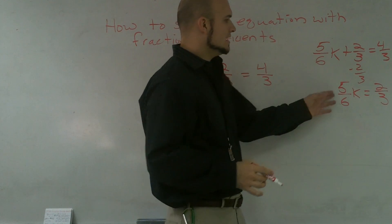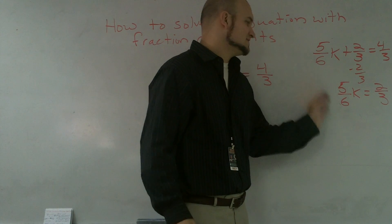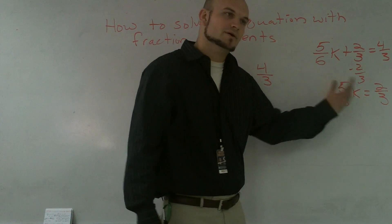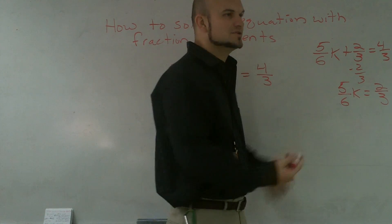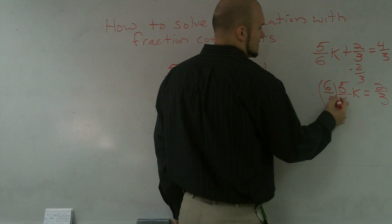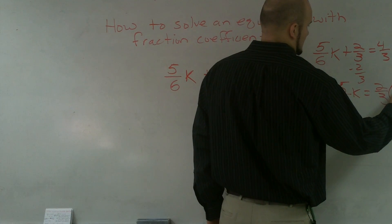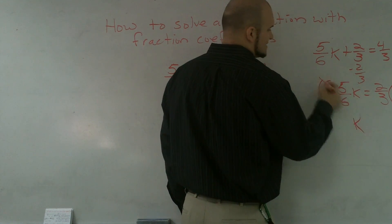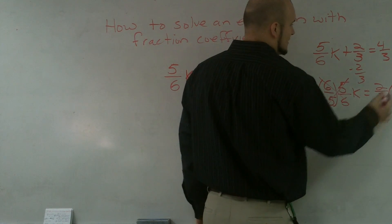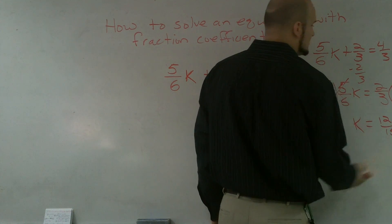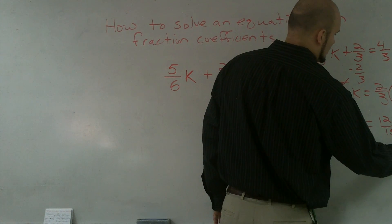so I get five-sixths k equals two-thirds. Then, I'm now multiplying a five-sixths times k, so I'm going to divide by a fraction, but we like to say, instead, we like to use... four-fifths k now equals 12 over 15, which can re-reduce down to four-fifths.